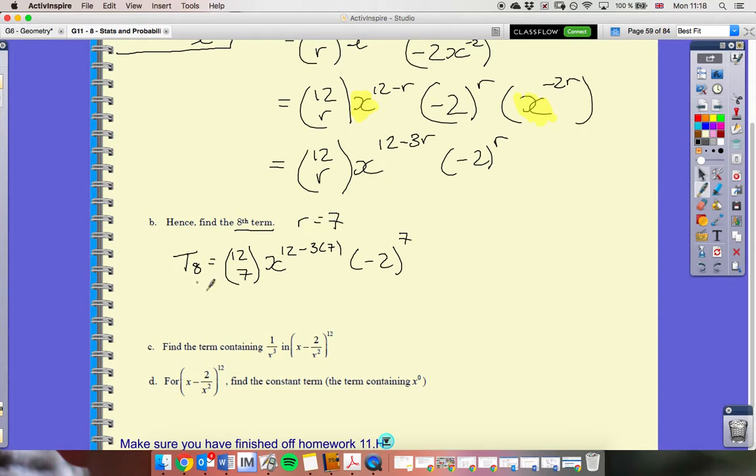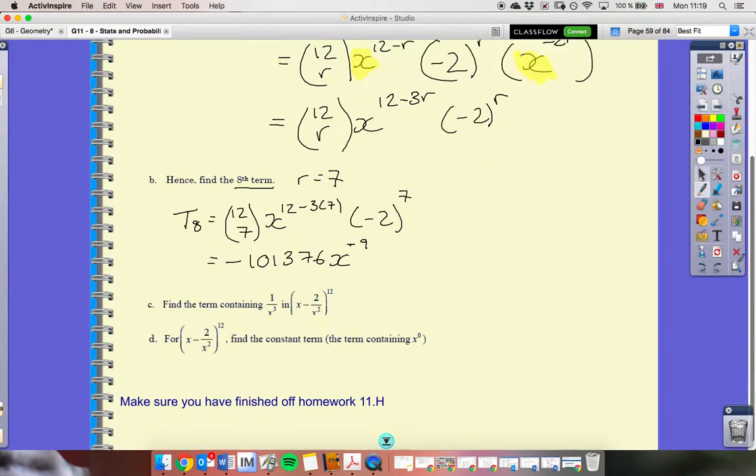This is now calculating. Work out 12 choose 7 on your calculator, and negative 2 to the power of 7. Multiply them together. 1 over 1, 3, 7, 6. And then, calculate this. 12 minus 21. It's going to be negative 9.